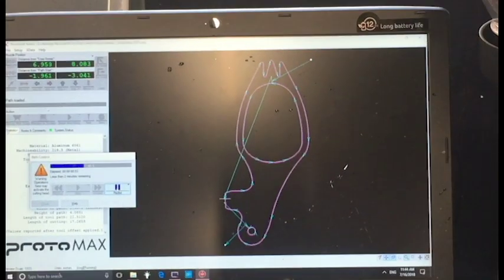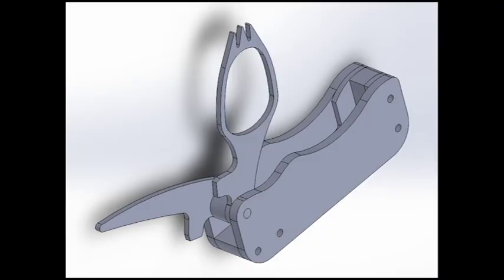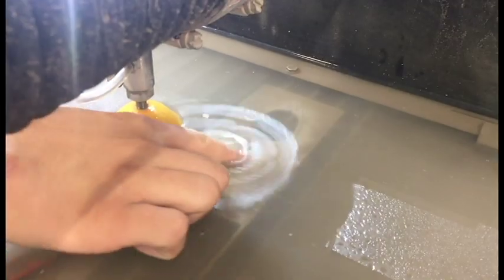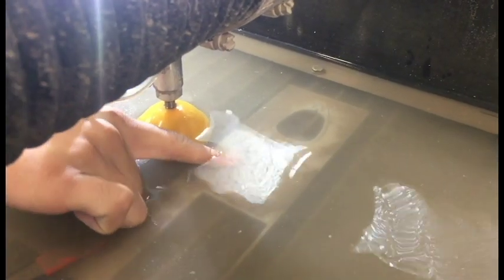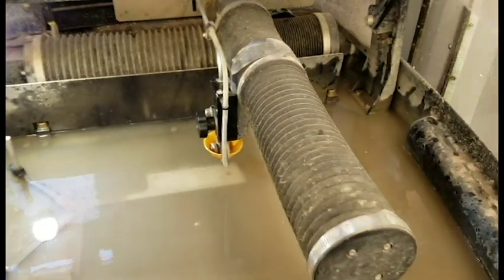First, models of the part and the final product are created using computer software. The shapes are then cut from scrap metal using a waterjet. Look at this bad boy, Ron. The waterjet does this quickly and with little manual labor. Since we're using thin sheets of metal, the waterjet was the quickest way to cut these shapes.